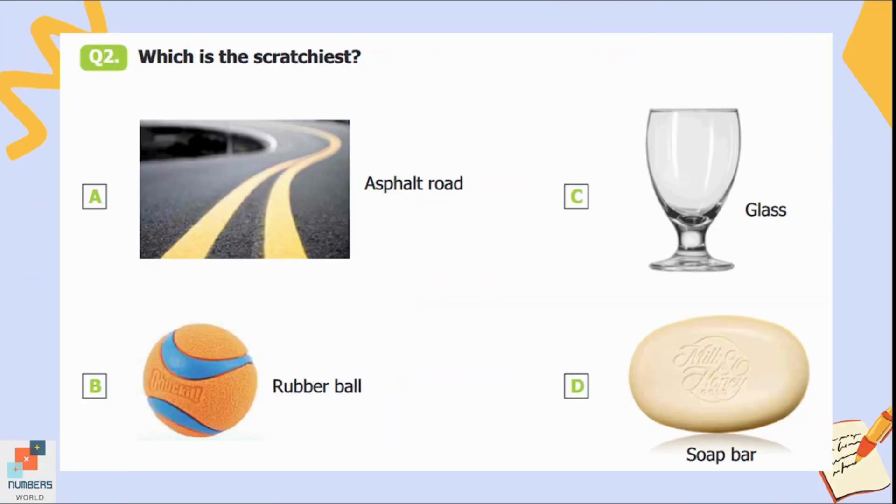Question number two: Which is the scratchiest? Option A is asphalt road, B is rubber ball, C is glass, and D is soap bar. Obviously, asphalt road is the scratchiest of all.